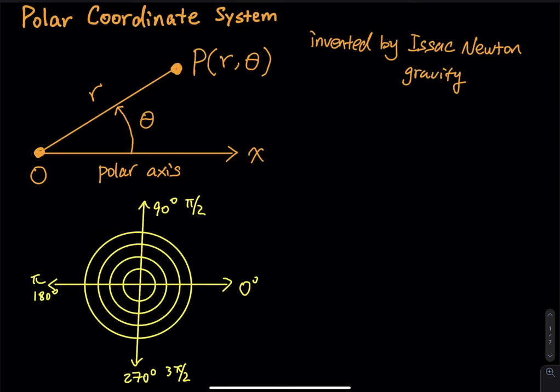So do you see the first picture? I have O, x, and then P. So let's explain each of this. So first of all, what is O? So the O is called the origin. Or you can call it a pole. The pole or origin.